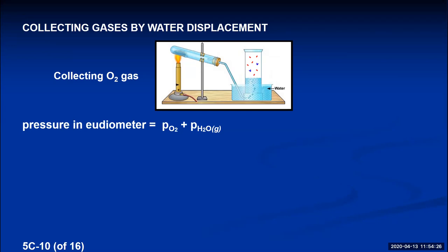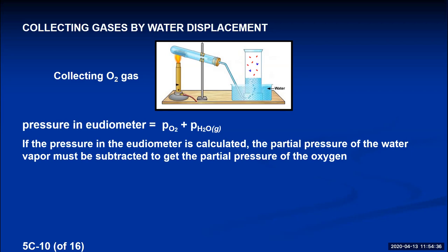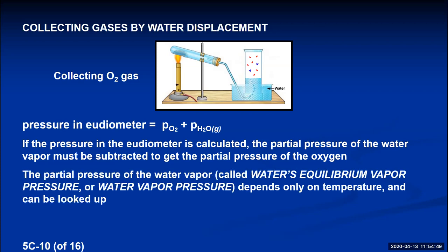To get the partial pressure of the collected gas, we subtract the water vapor pressure from the total pressure in the eudiometer. The water vapor pressure depends only on temperature and can be looked up from a table. If the thermometer reads 25°C, we look up the water vapor pressure and find it is 24 mmHg.